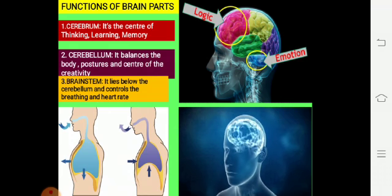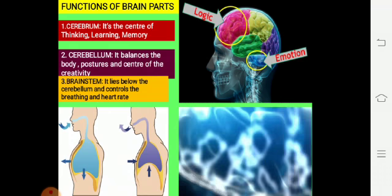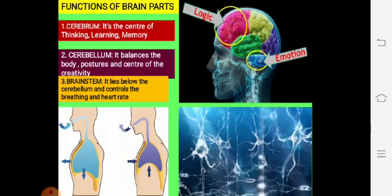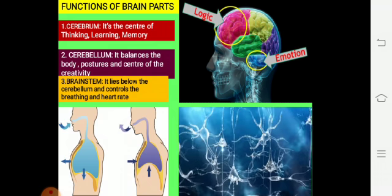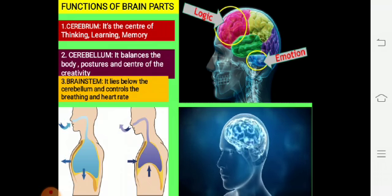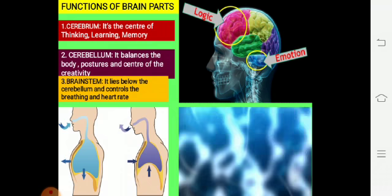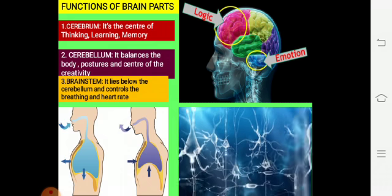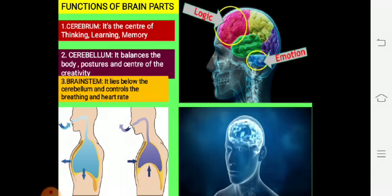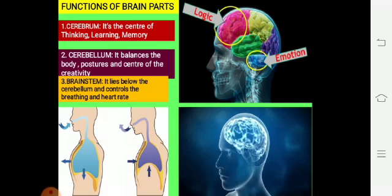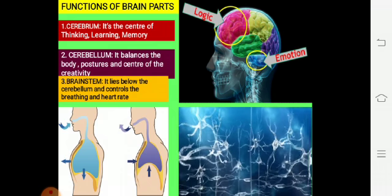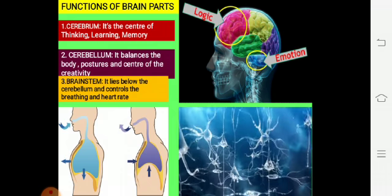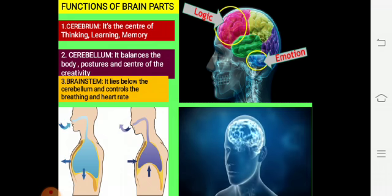The next part is the cerebellum, which lies below the cerebrum. The cerebellum balances the body, controls posture, and is the center of creativity. It is also associated with the emotions of our body. The third part is the brain stem, which lies below the cerebellum. It connects the brain to the spinal cord, and controls breathing and heart rate.